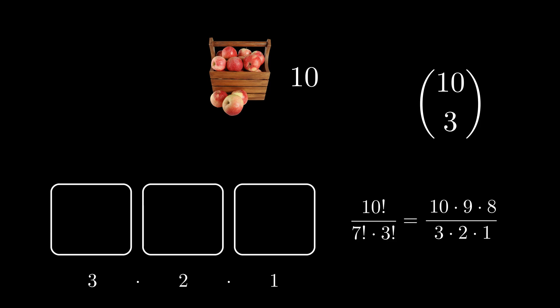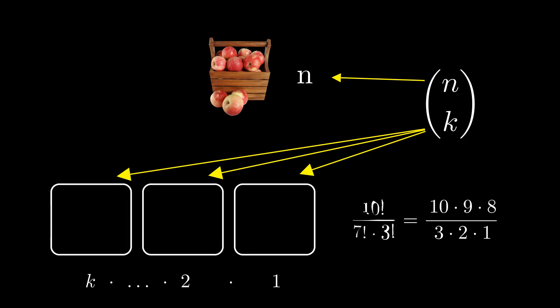We can write this as 10 choose 3. If we're not concerned about order, this expression should always come to mind. The top number shows how many elements we can choose from. The bottom number indicates how many elements we want to select. So we want to choose three apples out of ten. In general, we write this as choosing k elements from n elements. That's n choose k, which is calculated using the following formula.